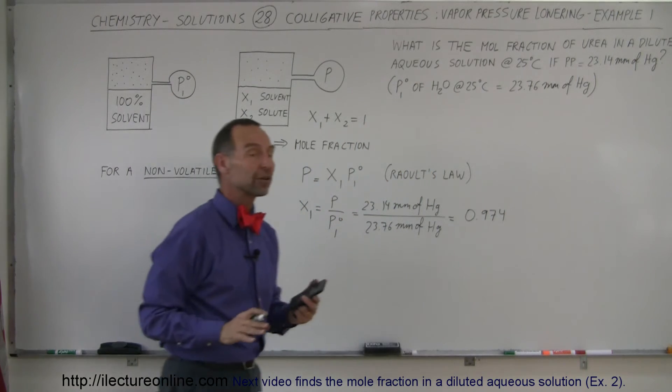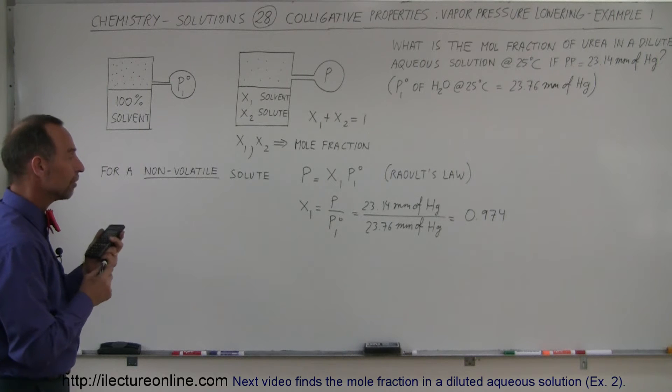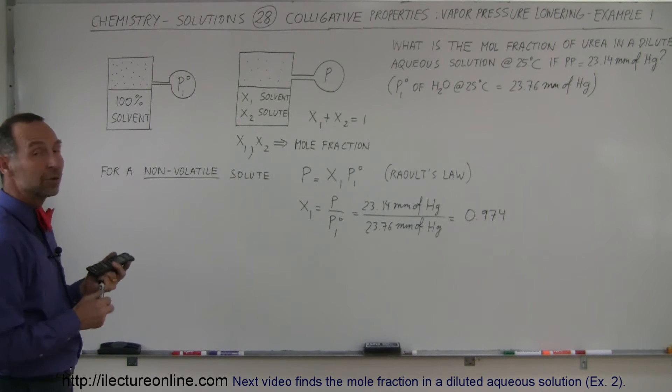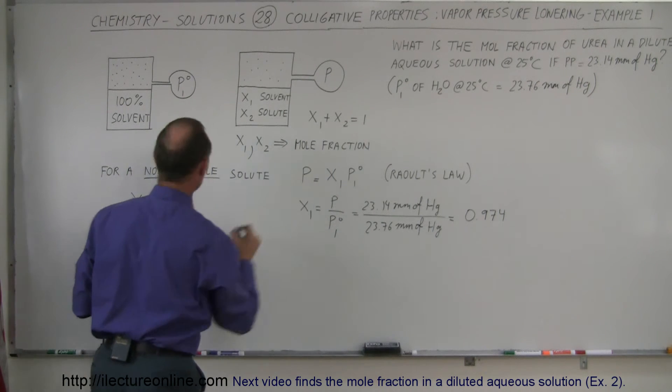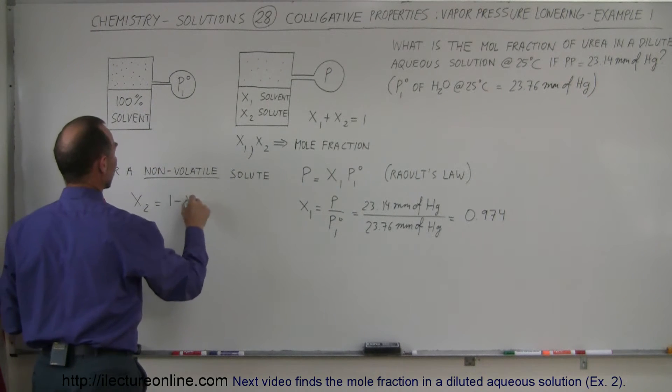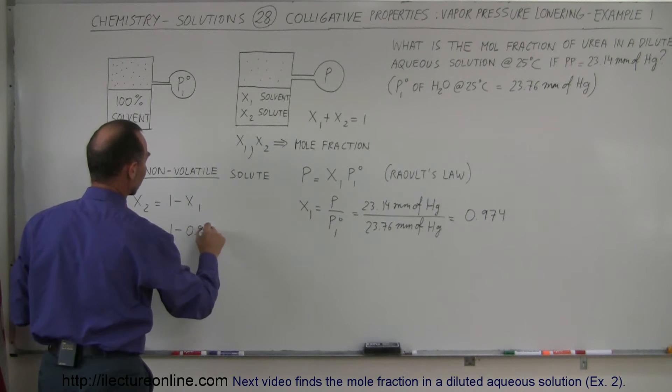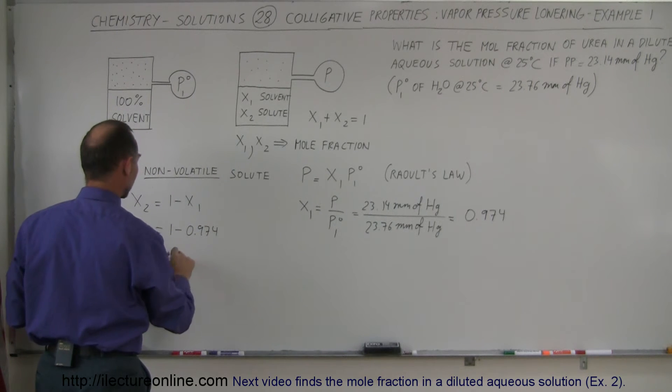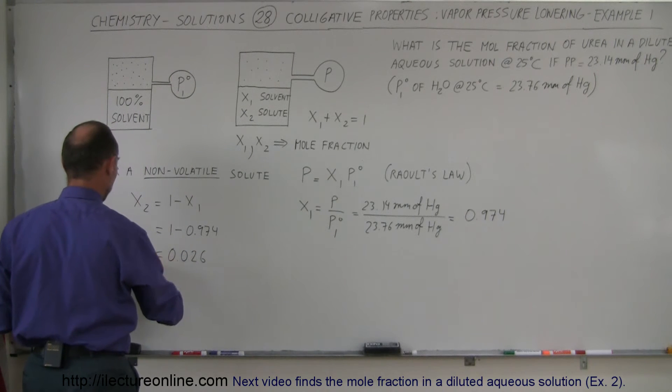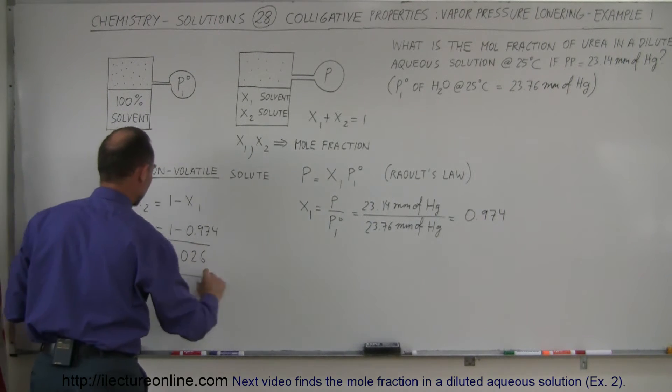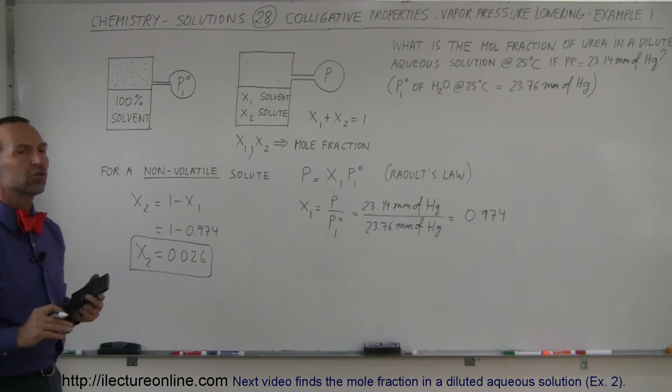That's the mole fraction relative to the whole thing of water, or the solvent, in the solution. So now we're trying to find X2. So we know that X2, based on this equation, is 1 minus X1. So in this case, that's 1 minus 0.974, which is equal to 0.026. That would be X2. That's the mole fraction of the urea. So what is the mole fraction of the urea? It's 0.026.